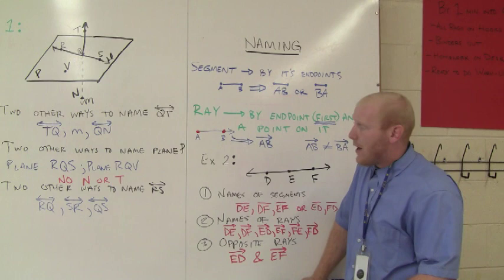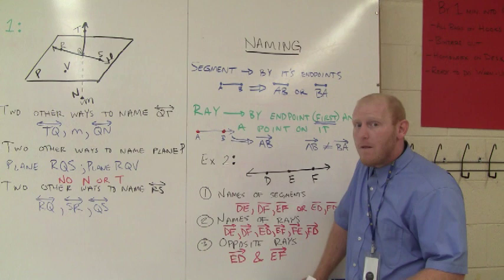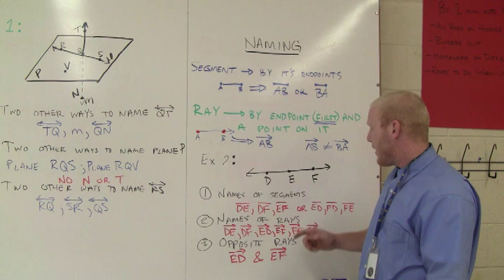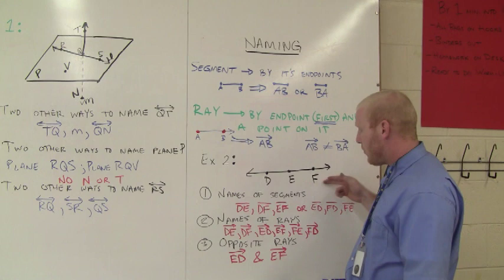Opposite rays. We talked about earlier how we name them, but remember, it's the same as rays, but opposite rays are special because when they're combined, they form a line. So what two rays here, when you combine them, form a line? Well, that would be ray ED going this way and ray EF going this way. When you combine them, you get the full line. So our opposite rays are ED and EF.